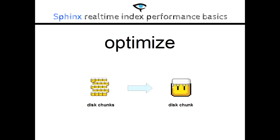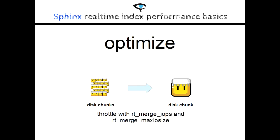The optimization merges all the disk chunks into one, so it is pretty I/O intensive, as it needs to read all data from a disk chunk, create a temporary chunk which isn't searchable, and then merge the next chunk into it. After that, the temporary chunk is brought in, and the chunks that have been merged are deleted. Right now, the optimization process is single-threaded, so you need to consider having a free CPU core for it. But the biggest problem can be the I/O impact, which can be throttled with RT-merge IOPS and RT-merge max I/O size.